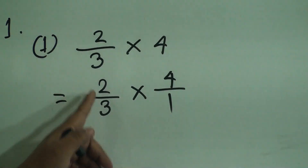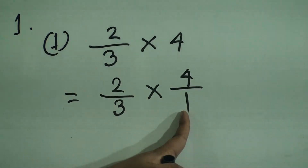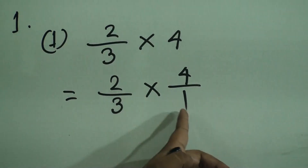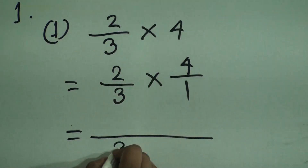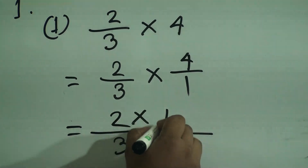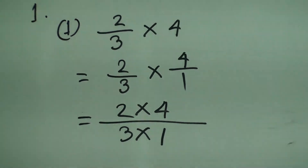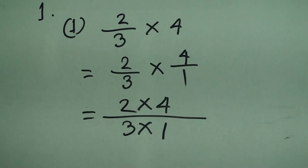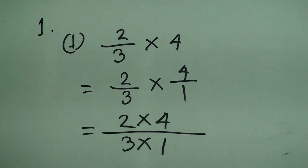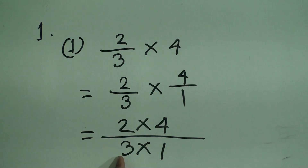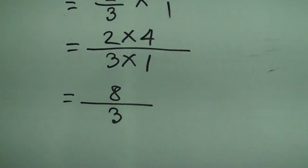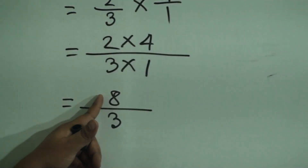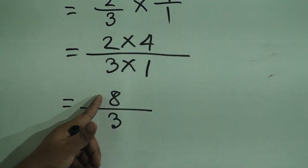Now notice: 2/3 multiply 4/1. At first we multiply numerator with numerator and denominator with denominator. So we write 2 multiply 4 on top and 3 multiply 1 below. Now we notice if any number can be cancelled — that means if there is any common divisor between numerator and denominator. Notice: 2 cannot cut 3, and 3 and 4 are not cut by any common number except 1. So we just do multiplication: 2 fours are 8 and 3 ones are 3.